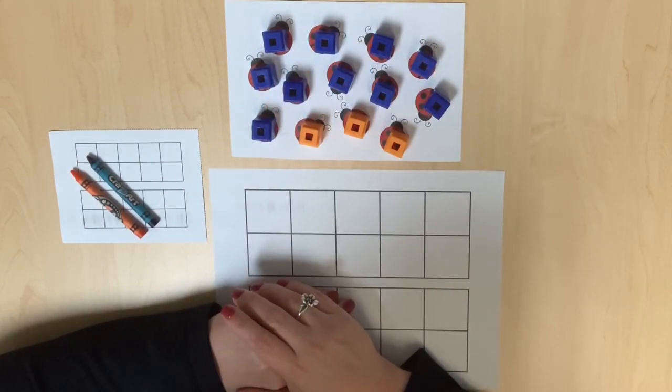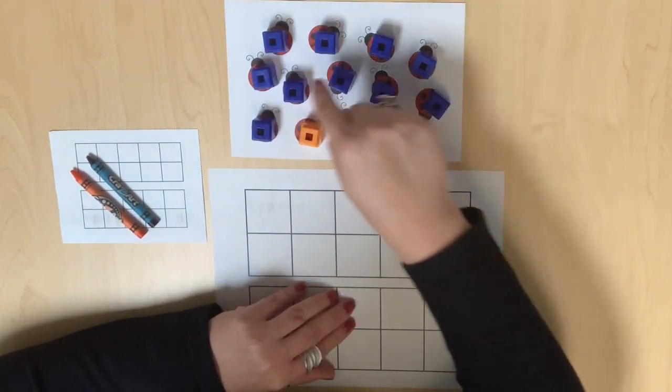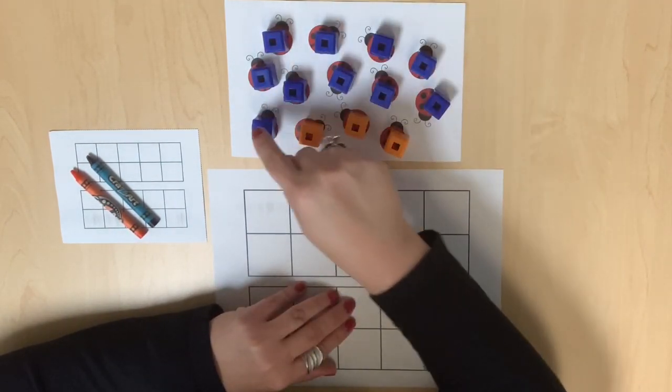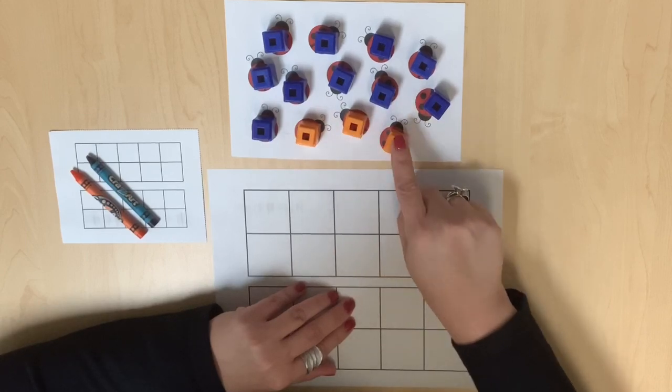As students count forward by ones, begin to emphasize how we can actually start with the value of 10 and count on the remaining quantity: 10, 11, 12, 13.